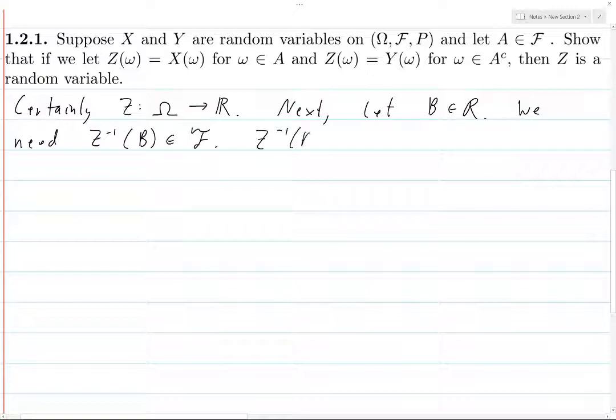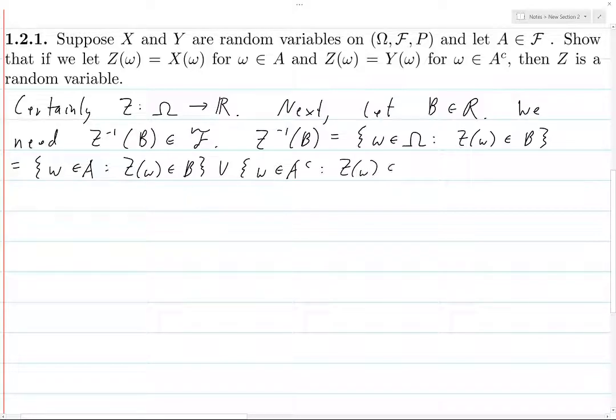So let B be some Borel measurable set on the real line. So what we need to prove is that the inverse image of this set is in the sigma algebra on omega. So let's prove that Z inverse of B equals - this is going to be all elements omega in space capital omega such that Z of omega is in B. But we can write this in two ways. So this collection of elements omega - any element omega is either going to be in A or it's not going to be in A. And so this set is actually the set all omega in A such that Z of W is in B union all omega in A complement such that Z of W is in B.